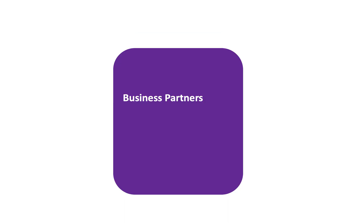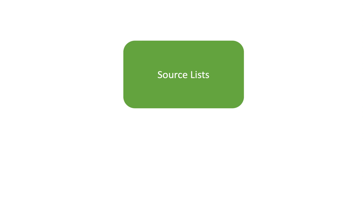Next, we have the business partners. In order to ensure purchasing functions work effectively in the MM module, accurate supplier information is necessary. In SAP S4HANA, this data is maintained in the business partner records, which includes suppliers and suppliers for financial accounting. Supplier records house address, payment, tax, and legal data are extended to the necessary purchasing organizations.